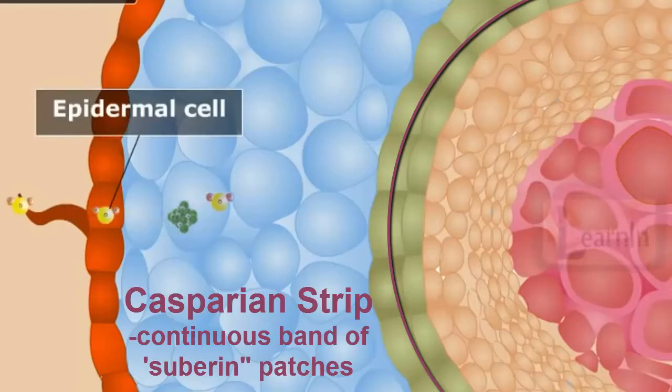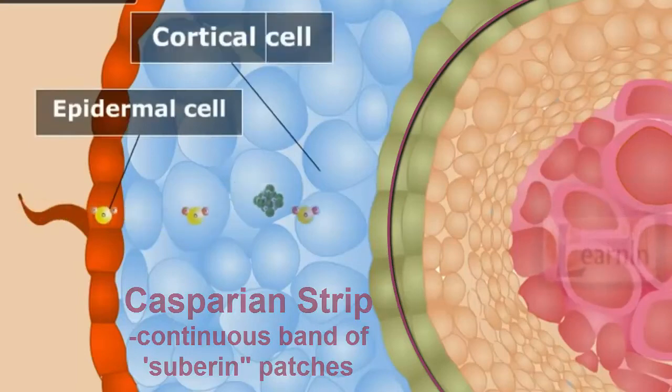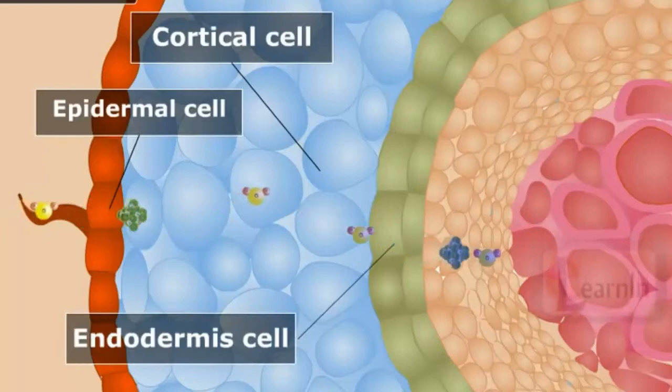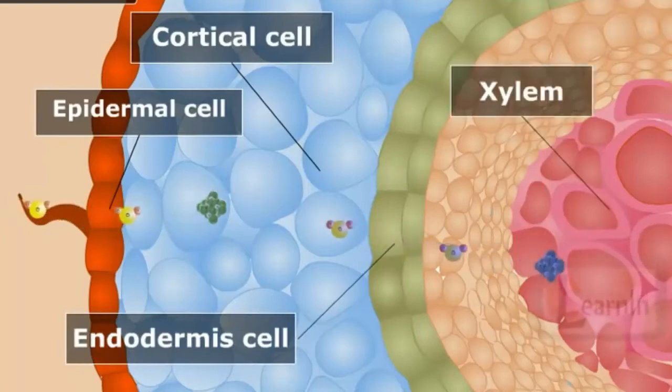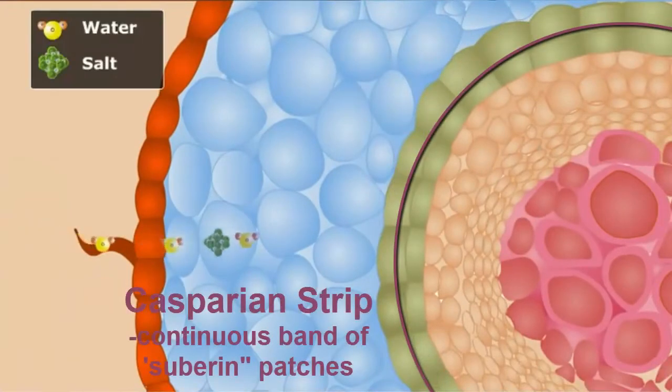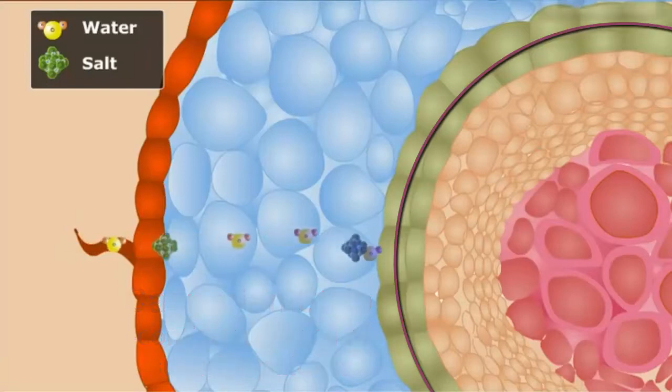If you remove this barrier, water along with other toxic substances and pathogens can rush to the central vascular tissues where they can be transported to the remaining areas of the plant body. With the endodermis preventing this, water and dissolved nutrients must cross the cells via the cell membranes where there is more regulation, making the endodermis a sort of a filter against harmful substances that may enter the plant.